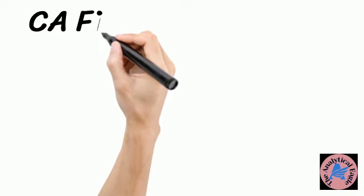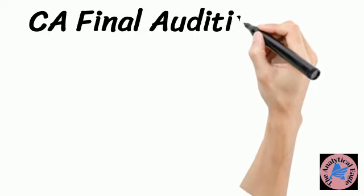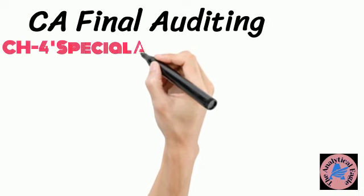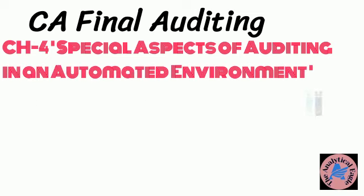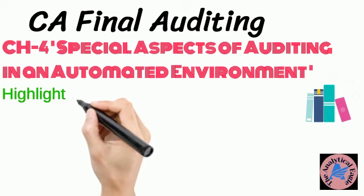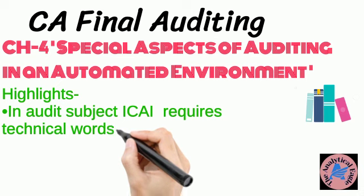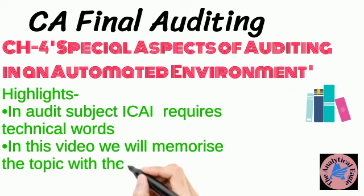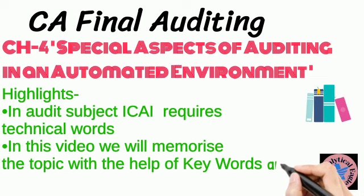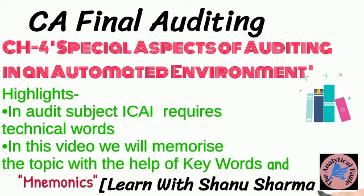Hello guys, welcome back to my channel, The Analytical Eagle. Today we will be covering CA Final Auditing Chapter 4: Special Aspects of Auditing in an Automated Environment. In this video, the technical words and key points are highlighted and formed into mnemonics. The chapter carries 4 to 5 marks and about two questions come from it. I'm sharing my way to study — if you have better mnemonics, share in the comments.